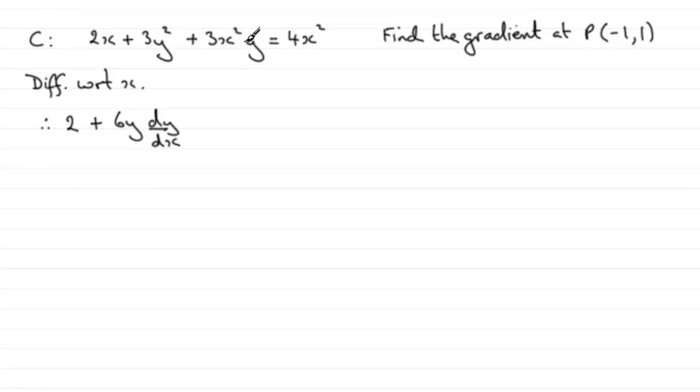Now for this term here, we've got a product of two functions. We've got the 3x squared and we've got the y. Two variable quantities here. So we're going to need to use the product rule. Using the product rule, we take one part, times it by the differential of the other part, and then we do it the other way around.